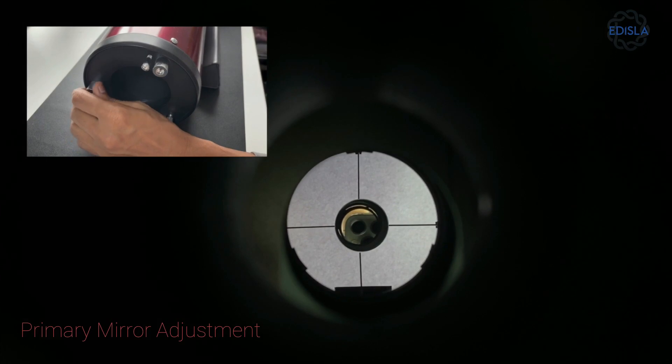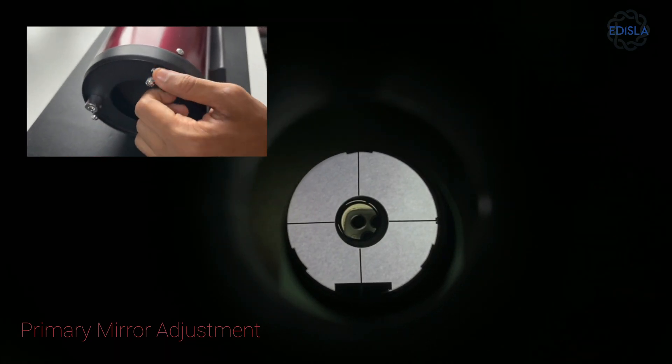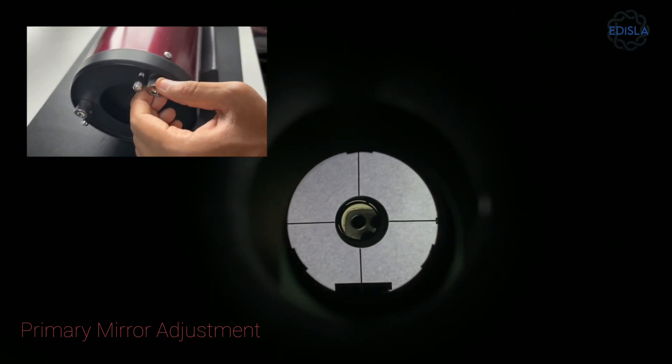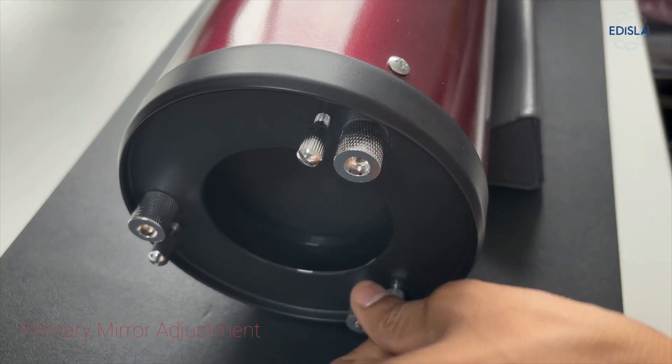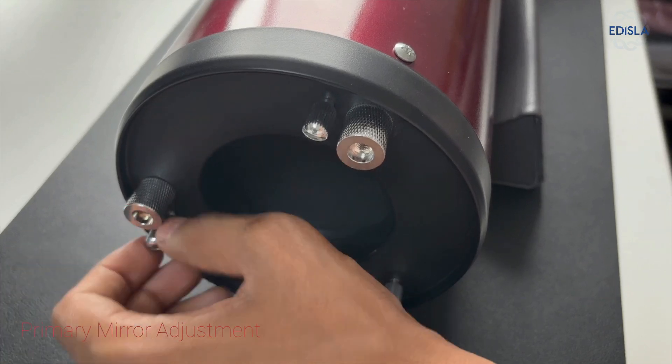Typically, primary mirrors require few adjustments, so this process is not frequent but is straightforward when needed. Once you've achieved symmetry, gently tighten the locking screws to secure the primary mirror in place. You're now equipped to handle situations where the primary and secondary mirrors are misaligned.